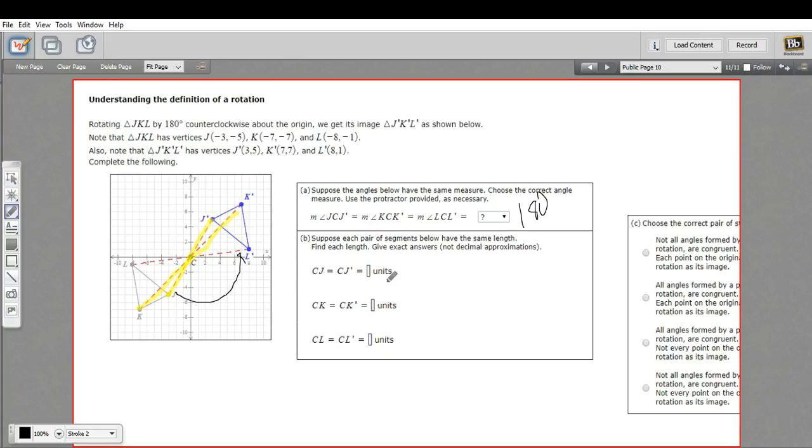And then they're asking us to find the measurement of each of these segments of the original point to the center of rotation, from the center of rotation to the rotated point. They're telling us, actually, that those are equal. You probably would have guessed that already. So if we figure out one of them, we've got the other.